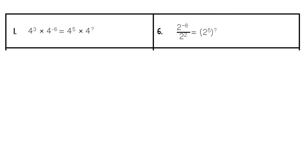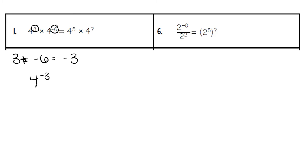Moving on to the other worksheet page, we are now dealing with negative exponents. We are first multiplying in this first problem, so we would add the exponents: 3 plus negative 6. 3 plus negative 6 would give us a negative 3, and so that answer would be 4 to the negative 3rd.